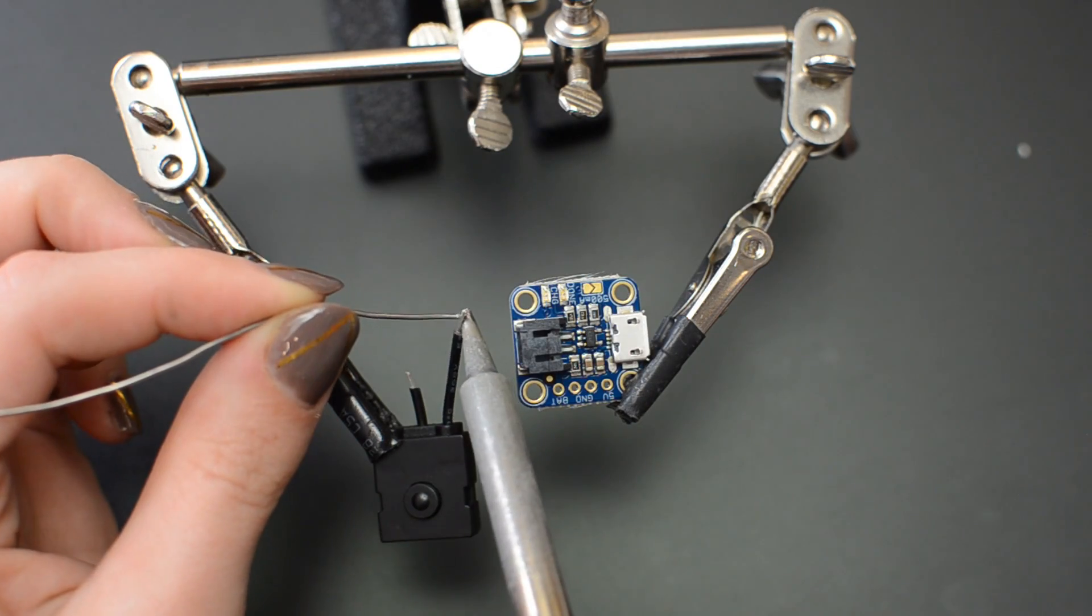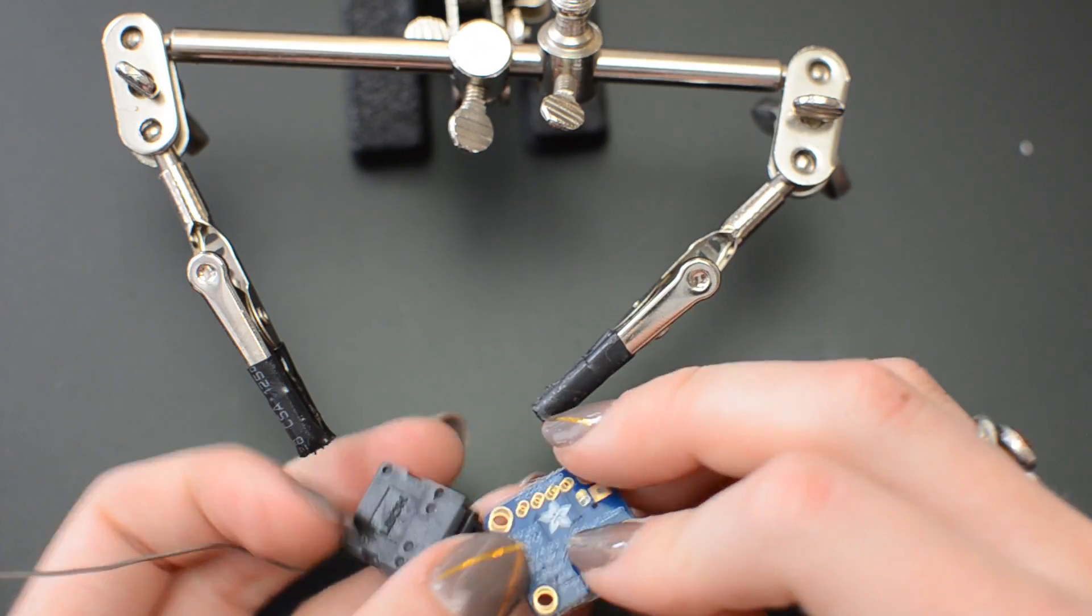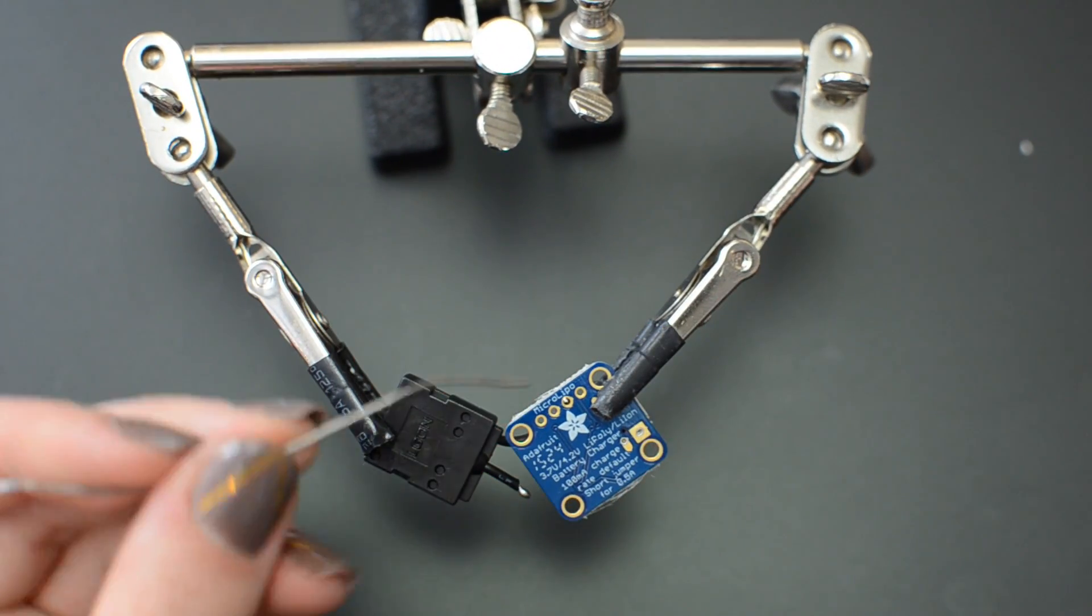Trim the leads of the clicky on-off switch and tin both stripped ends. Solder one switch wire to ground of the Adafruit Li-Poly charging board.